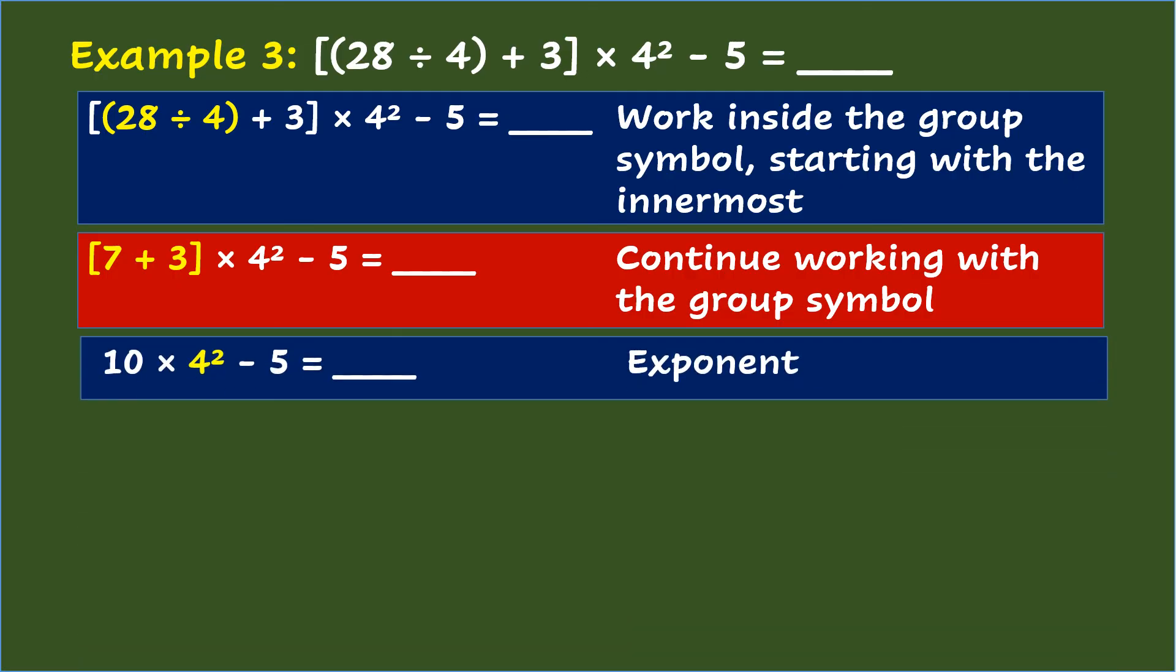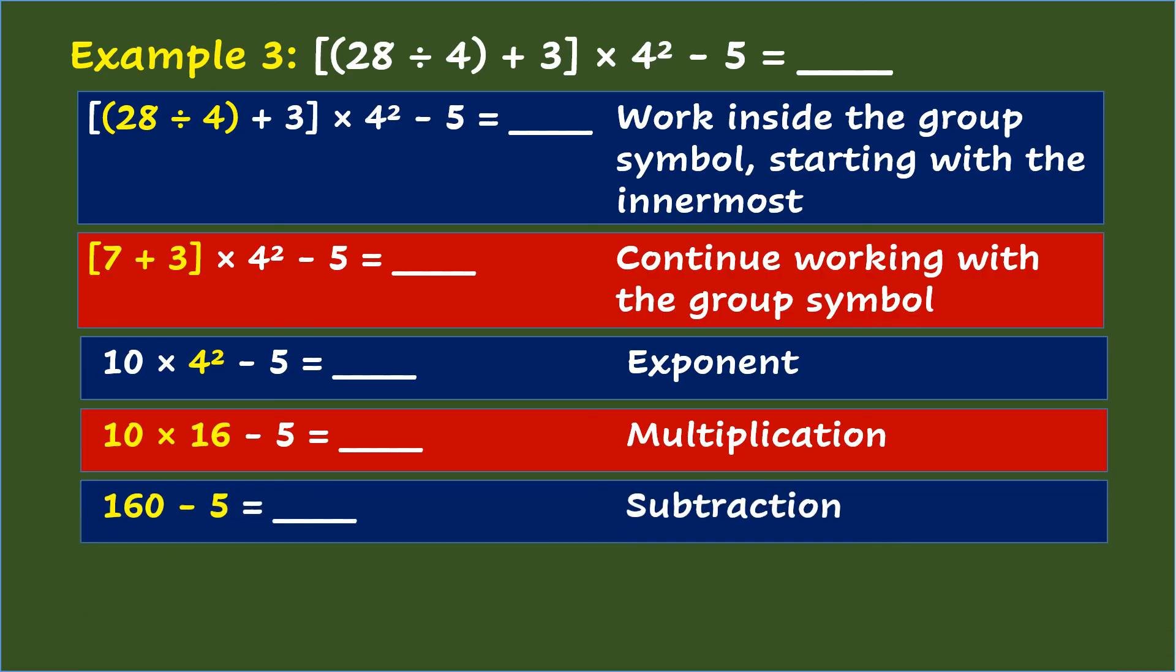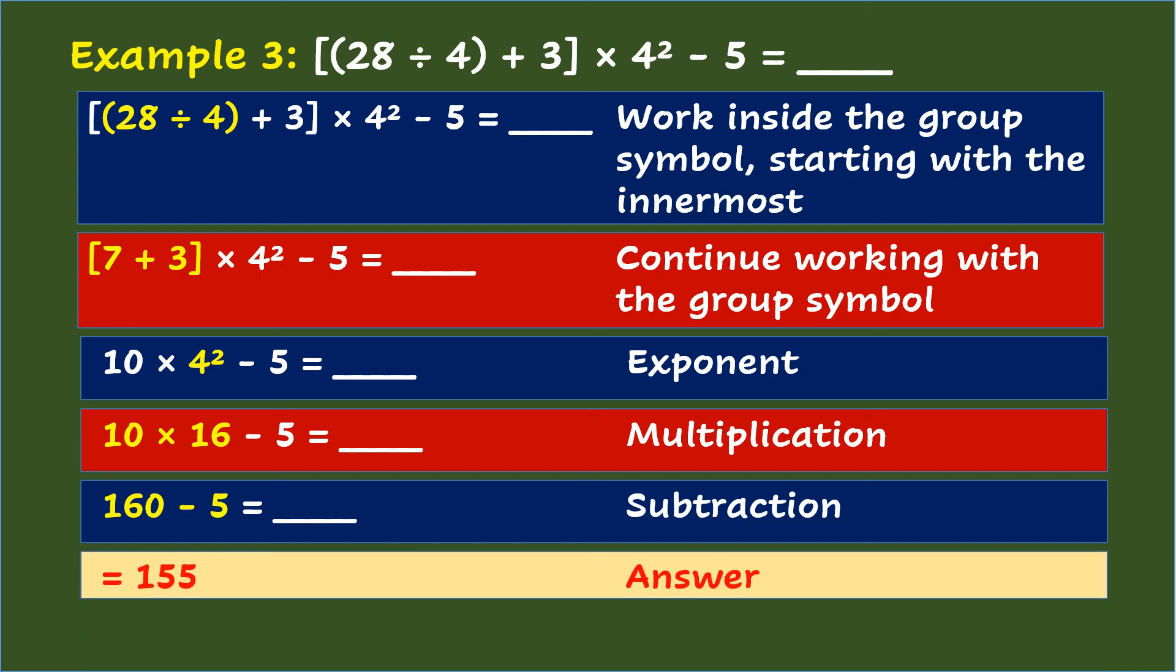Third is do the exponent. So that's 4 squared equals 16. Fourth is do the multiplication. So that's 10 times 16 equals 160. Fifth step is to do the subtraction. So that's 160 minus 5. And the answer is 155.